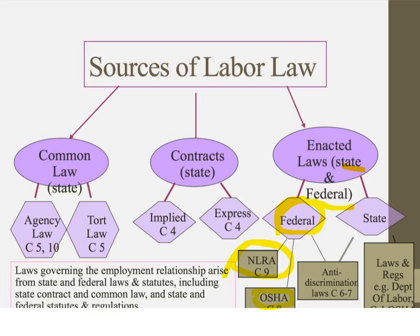In the line between federal and state, we have a combination of laws — those are anti-discrimination laws, which we looked at in chapters 6 and 7. I listed them with arrows from both state and federal because we have the Federal Civil Rights Act, but in California we also have state laws found in the Department of Fair Housing and Employment. There are also other state laws — both regulations and laws enacted by the legislature.